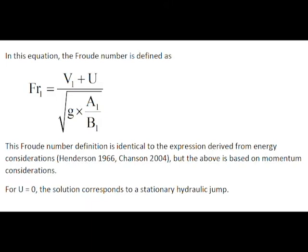In this equation, the Froude number is defined as the relative inflow velocity V1 plus U, divided by the square root of g times the ratio of the initial cross-sectional area divided by the initial free surface width. This Froude number definition is identical to the expression derived from energy consideration, but here this development is based upon momentum consideration. When U equals zero, the solution corresponds to a stationary hydraulic jump.